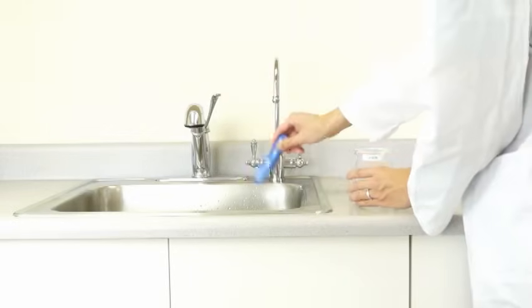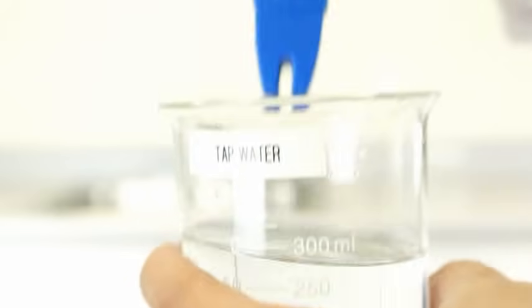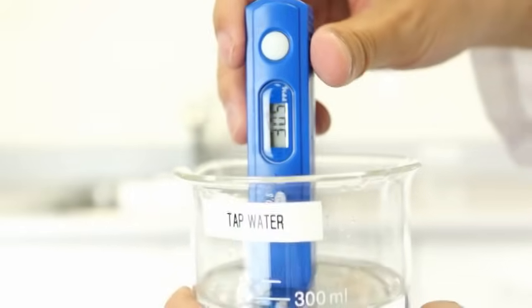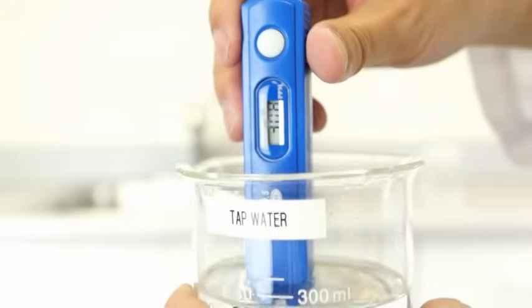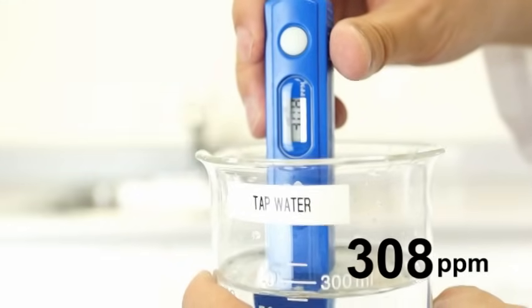Shake off any excess water and then test the tap water the same way. The meter shows 308 parts per million.